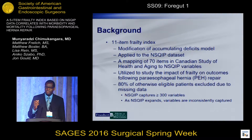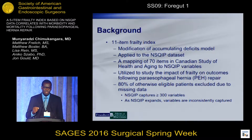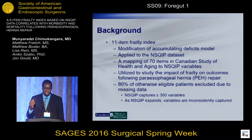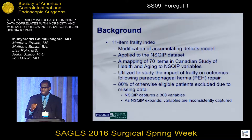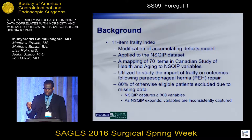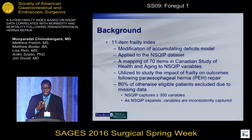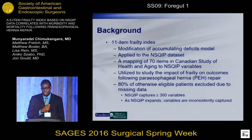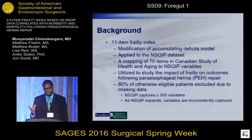Researchers have then developed this 11-item frailty index, which is a modification of the accumulating deficits model. This model was designed for the NSQIP dataset, and it's a mapping of the 70-item Canadian study-based index to the variables found in the NSQIP dataset.